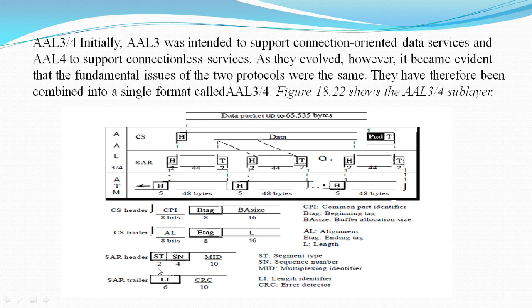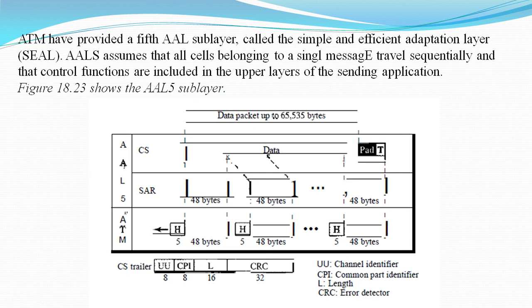The next figure is the AAL 5 sublayer. The four trailer fields in the CS layer are: user-to-user, which is used by end users as described; Common Part Identifier; Length; and CRC.